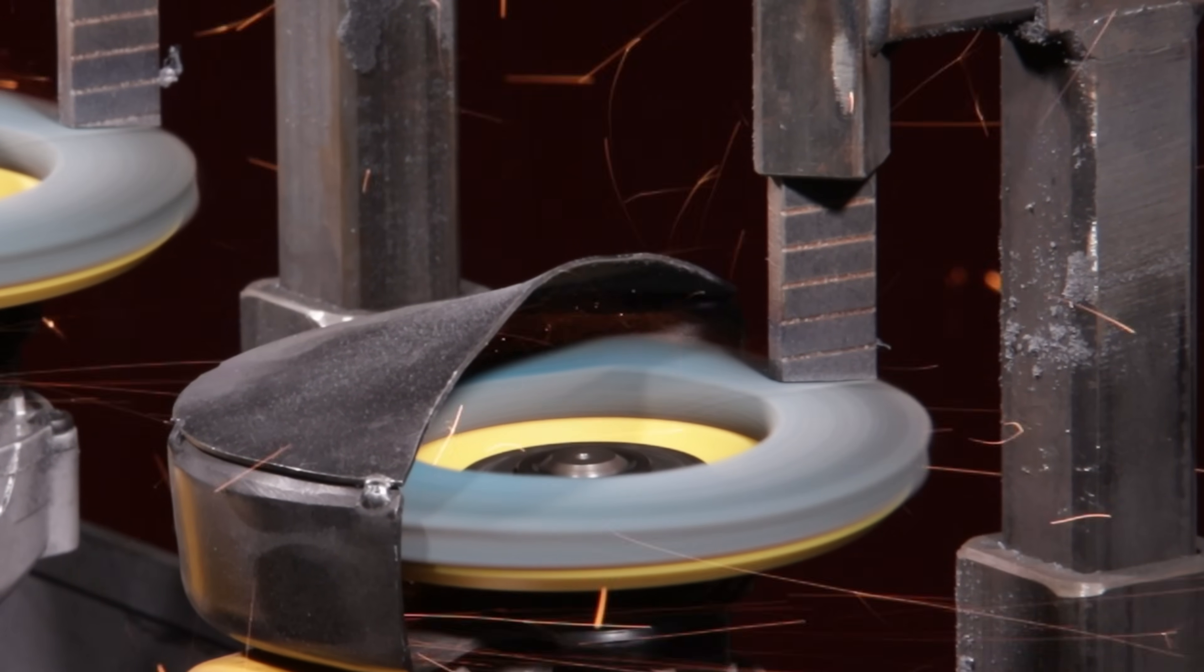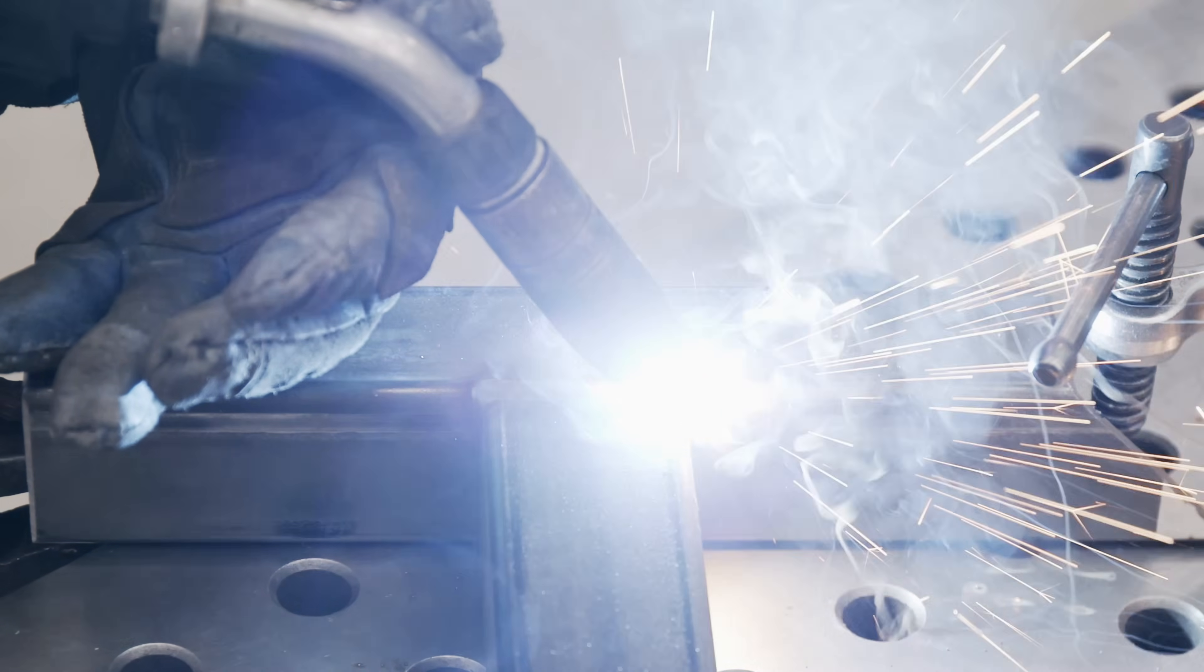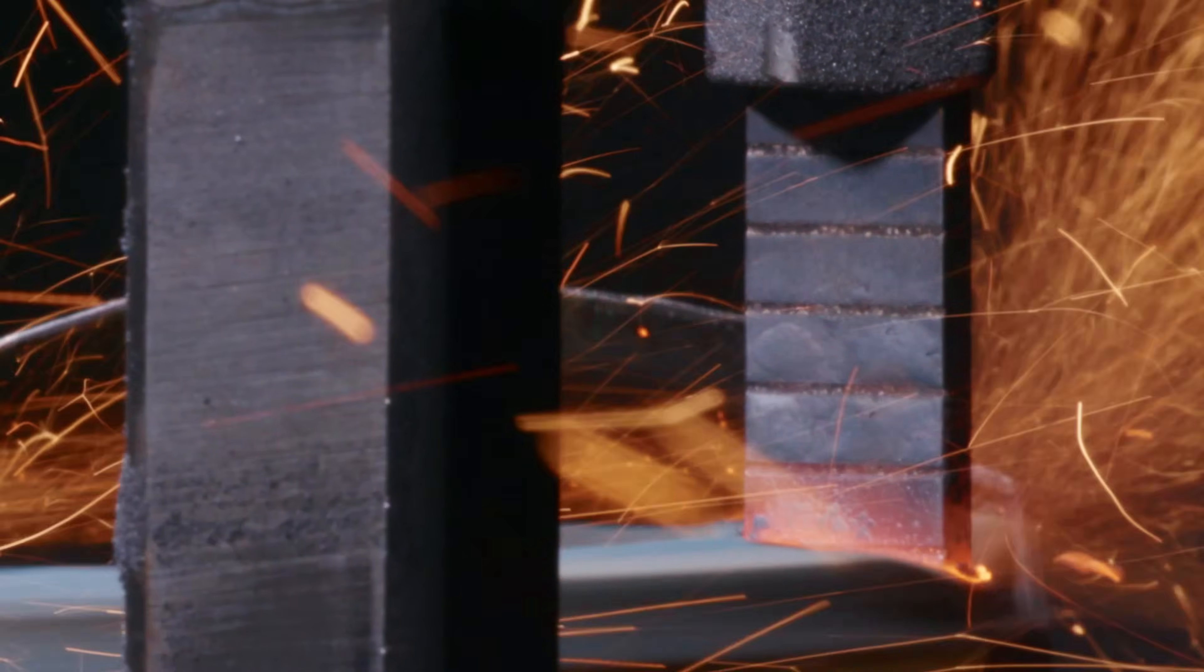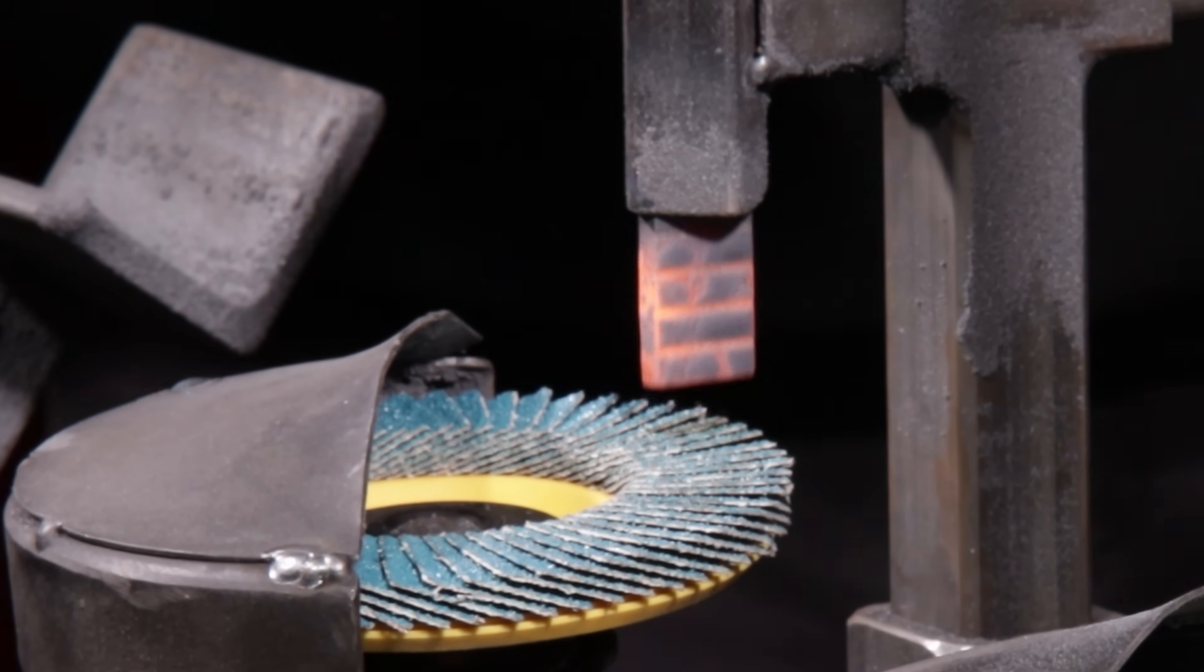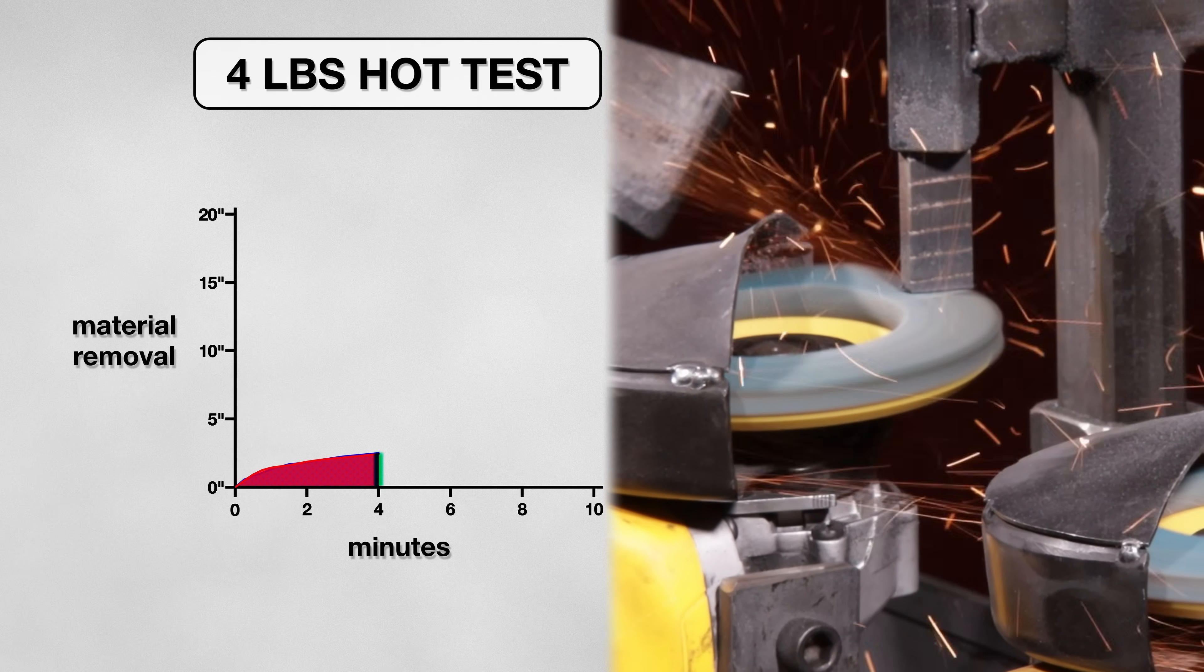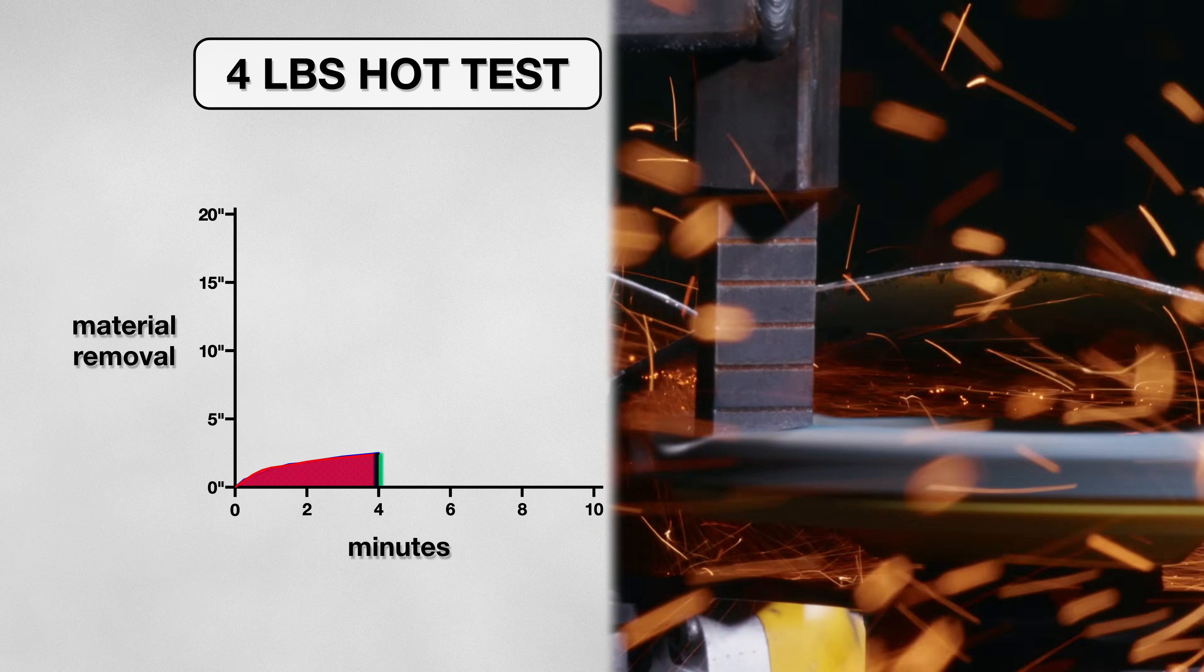To get to the bottom of what was holding this disk back, I began switching up some variables. First, I wanted to add some heat to this experiment. My hope is by heating up the coupon, it will give the disk an advantage, helping it cut more metal before it peters out. So I heated the first few inches of the test material and let the disk go to work. But I soon realized the heat had almost no impact on the disk's performance, giving me near identical results to the previous test. To be frank, these results aren't fantastic, but I'm not writing off this disk quite yet.